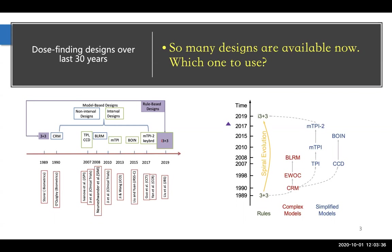There are too many to include everything. But roughly speaking, in both figures there's a starting point of the 3+3 design, published in 1989 as a statistical paper. Then in the next year there's the CRM — the continual reassessment method — which is the first model-based design. For a long time, CRM and its variations and improvements were the focal point of research for almost over a decade. Until around 2007, there was development in the so-called interval-based designs, notably the TPI design — the toxicity-probability interval design — and also the CCD, the cumulative cohort design.